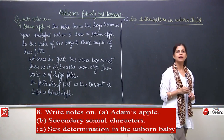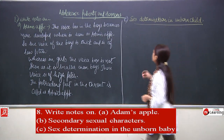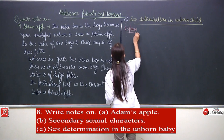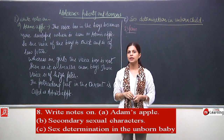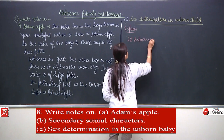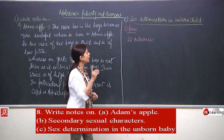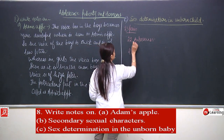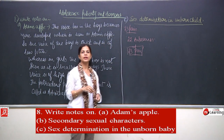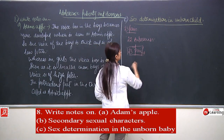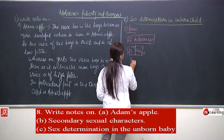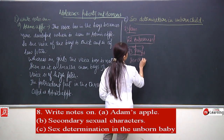So what decides whether the child will be a boy or a girl? Chromosomes. Chromosomes are thread-like structures present in the nucleus of a cell. Human beings have 23 pairs of chromosomes. Out of these 23 pairs, 22 pairs are the same and are known as autosomes. One pair is different and is known as the sex chromosome.